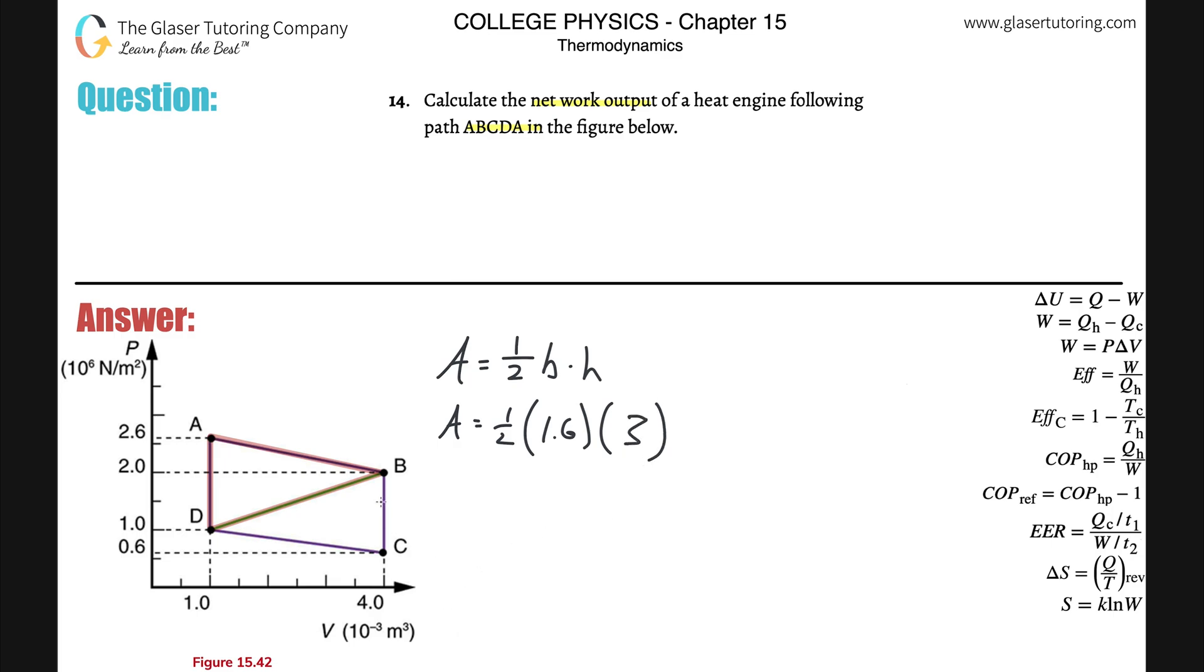Now you just have to consider the units that you're using. This is three, the volume times 10 to the minus three. And then the units of pressure are in Newton per meter squared, but it's times 10 to the sixth, so simply just incorporate that in, 10 to the sixth. And that would be your area for the red one.